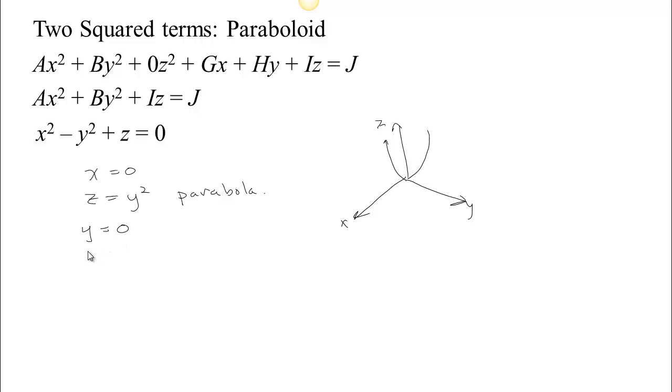If we set y = 0, then we get z = -x², which is also a parabola. So 2 out of 3 are going to be parabolas, and therefore we know the name of this thing is a paraboloid. But if we look in the xz plane, so in the xz plane, we're seeing parabolas this way.